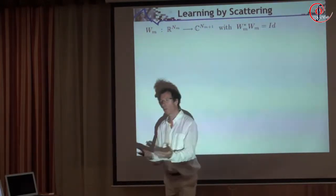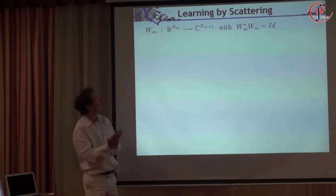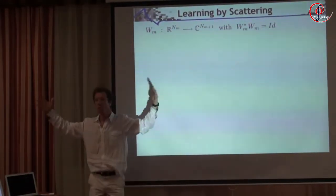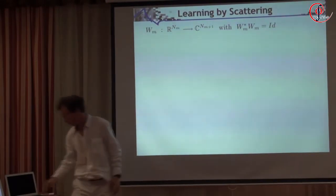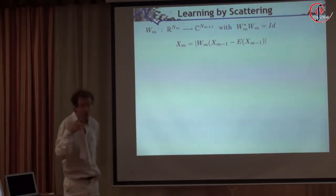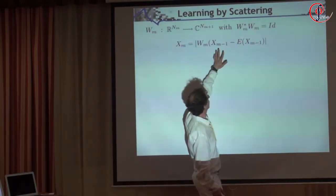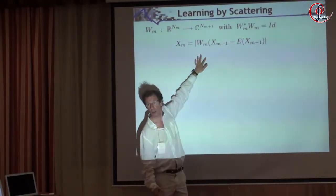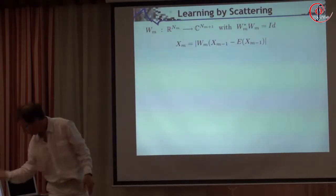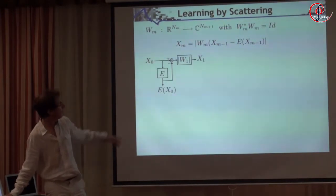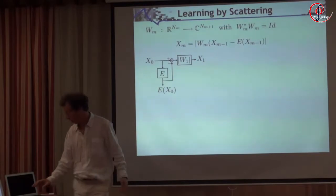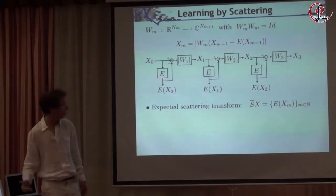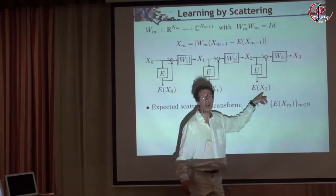How can we interpret all that from a broader perspective? We have an operator — the wavelet transform — which takes us from ℝⁿ to a bigger space ℂⁿ⁺¹, which preserves the norm, which is unitary. What we are doing is a very simple iteration: at each layer m of the network, we take our random process, center it, apply the transformation through this unitary operator, then simply take the modulus. We begin from x, get the expected value, center it, apply W₁ and take the modulus. Then take the expected value, apply W₂ and modulus, and so on. That's what these deep networks are essentially doing. The expected scattering is just the output of this network — you have a kind of dynamical system.